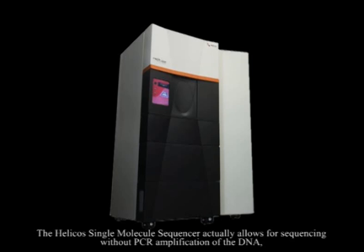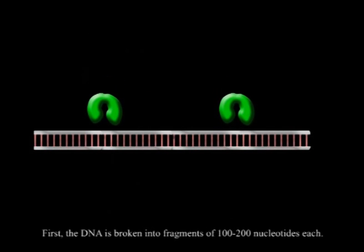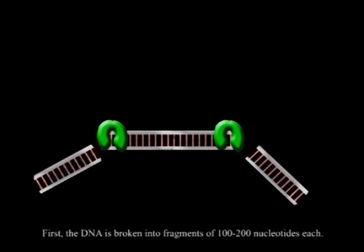The Helicos Single Molecule Sequencer actually allows for sequencing without PCR amplification of the DNA, enabling shorter preparation times while decreasing the chances of error. First, the DNA is broken into fragments of 100 to 200 nucleotides each.